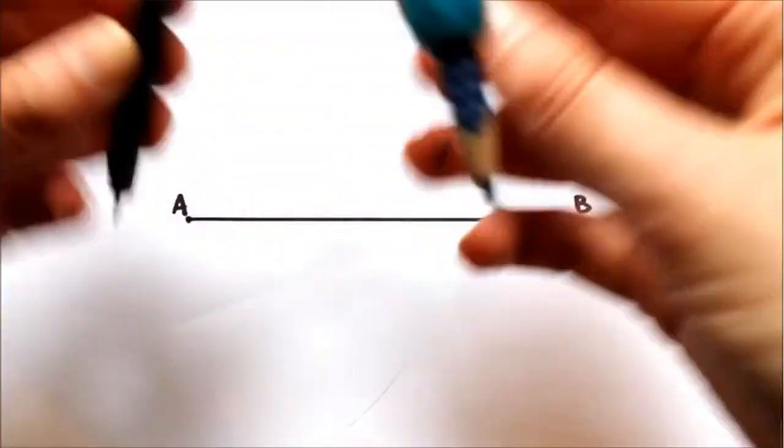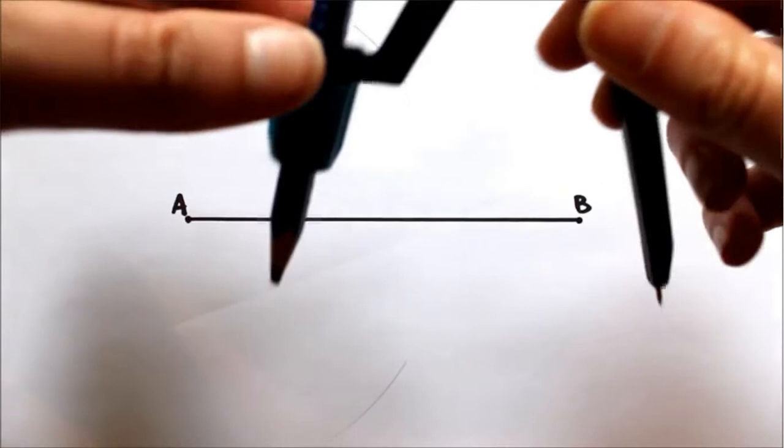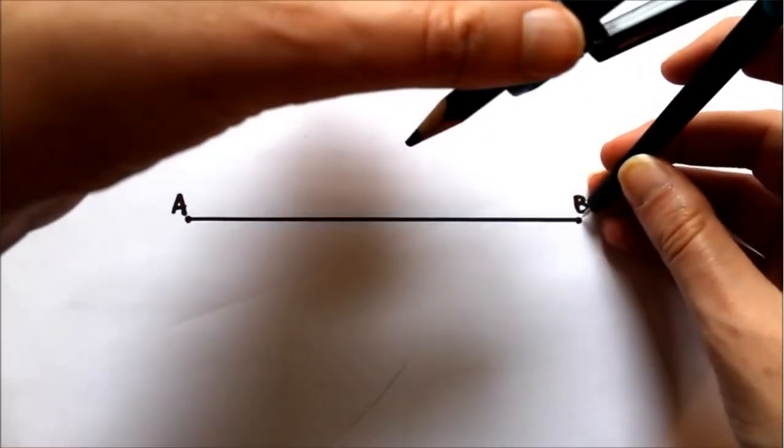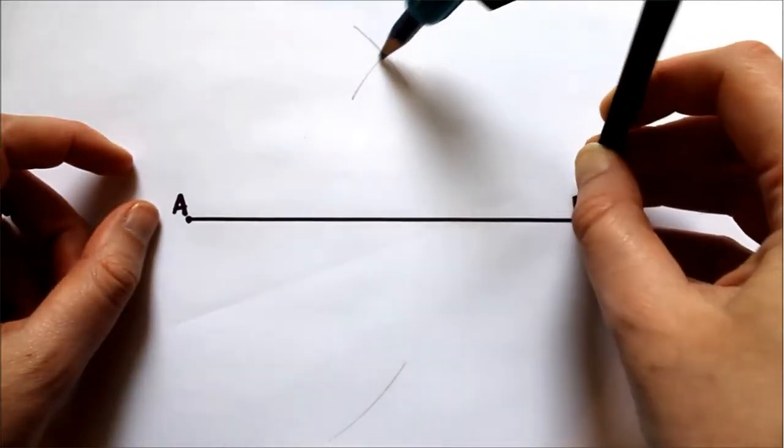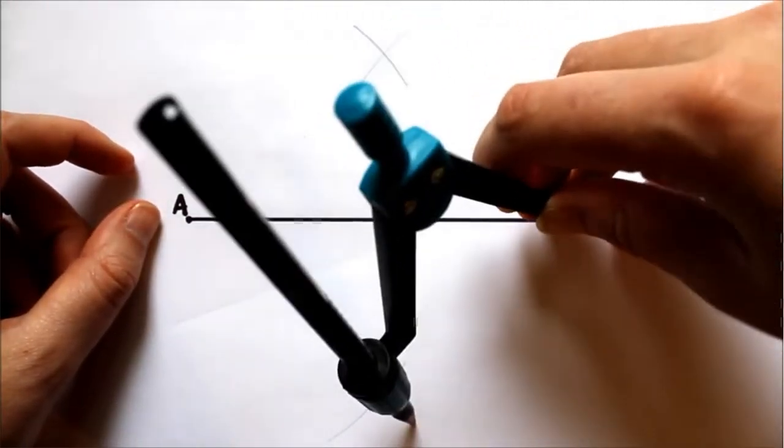We have to do the distance more than half of AB so that the arcs intersect. Then we put the point at B and keeping the same distance as we did before, we draw another two arcs.